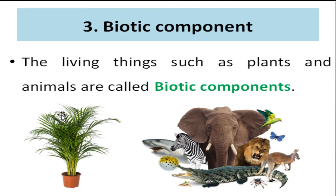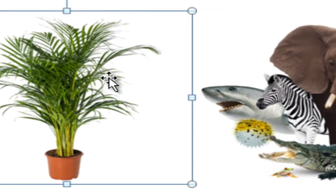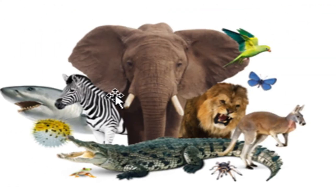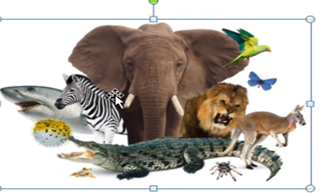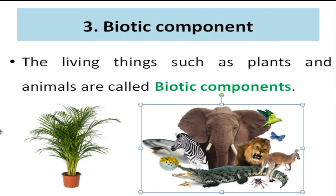Our next keyword is biotic component. The living things such as plants and animals are called biotic components. For example, plants and animals are considered as biotic components.